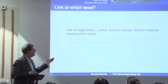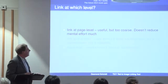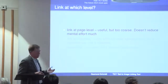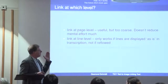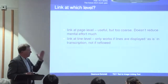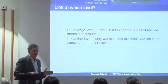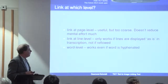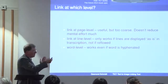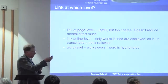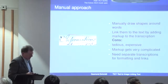At what level do we link text and image? We could link at page level — that's quite easy, but it's rather coarse and doesn't reduce the mental effort of finding words in the image. We can link at line level, but this limits the interface — we'd have to follow the original document's lineation and can't reflow text for modern devices like smartphones or iPads. Word level seems to work best: we take individual words one-for-one, and even if they're split over a line we can have a split image.